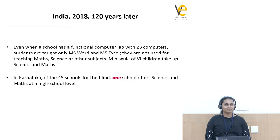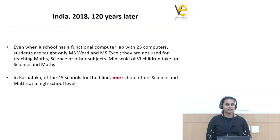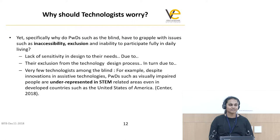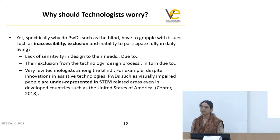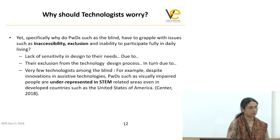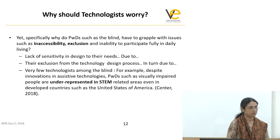In Karnataka we have 45 blind schools, out of which only one school is teaching math and science up to 10th grade. This is the case in most states in India. Students drop out of math and science from 5th or 7th grade because the government has given them alternate subjects like music and political science — based on the assumption that blind people cannot study science and math. There is only one school in Karnataka allowing science and math after class seven.